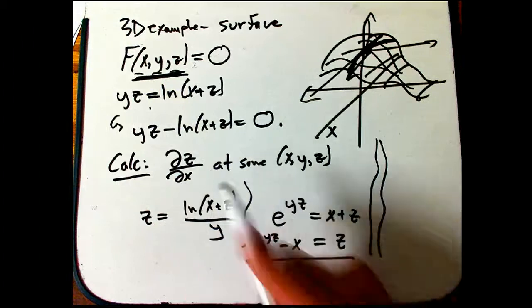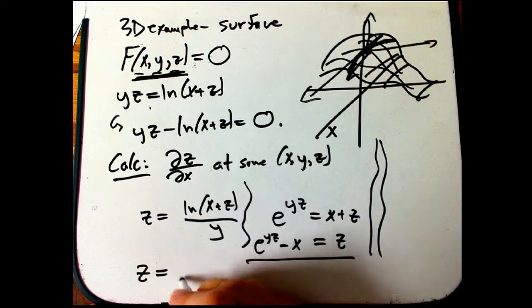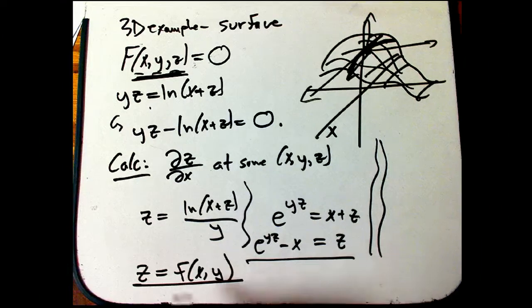The perspective, the other perspective, is that secretly, if I could solve this, well, in principle, there is something to be solved. It's just the algebra doesn't work. Z is a function little f of x and y, where z is special. It's the output, and x and y are treated as the inputs.